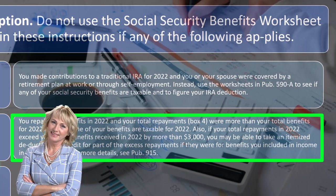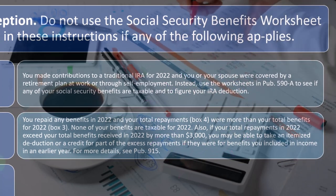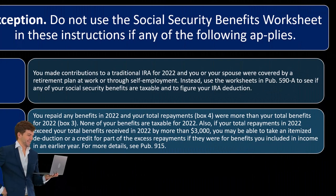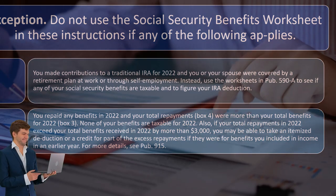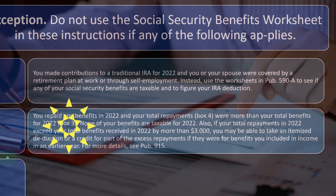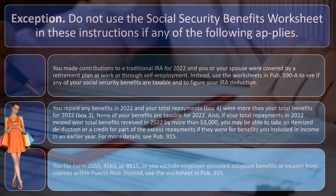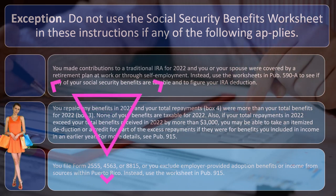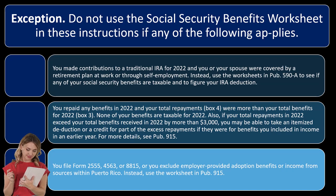If you repaid any benefits in 2022 and your total repayments (Box 4) were more than your total benefits for 2022 (Box 3), none of your benefits are taxable for 2022. If repayments exceed benefits by more than $3,000, you may be able to take an itemized deduction or credit for part of the excess if those benefits were included in income in an earlier year. See Publication 915 for details.